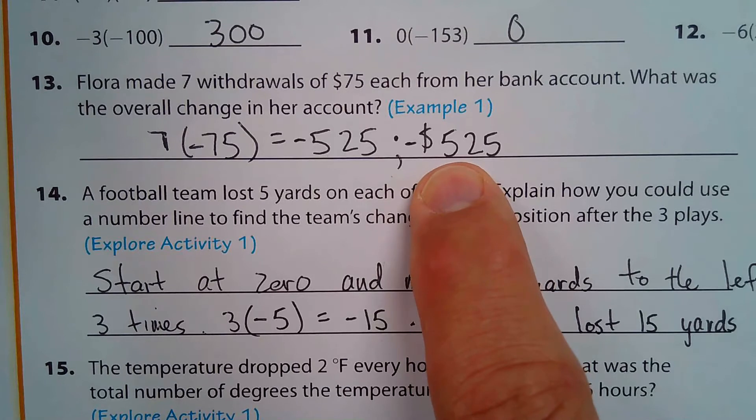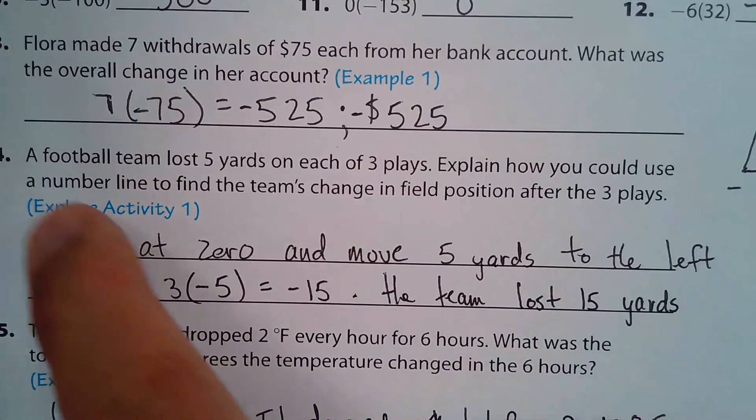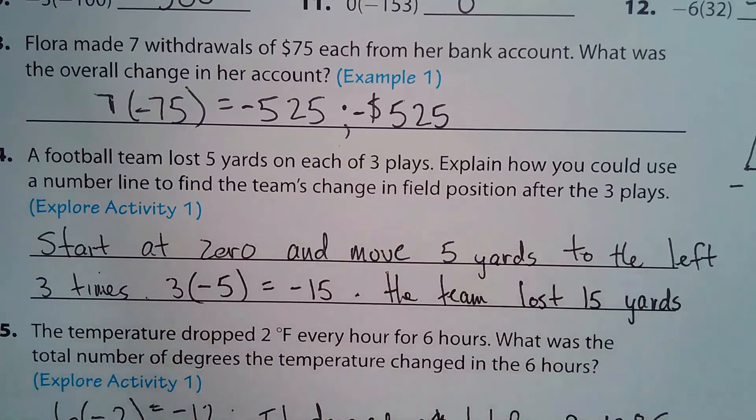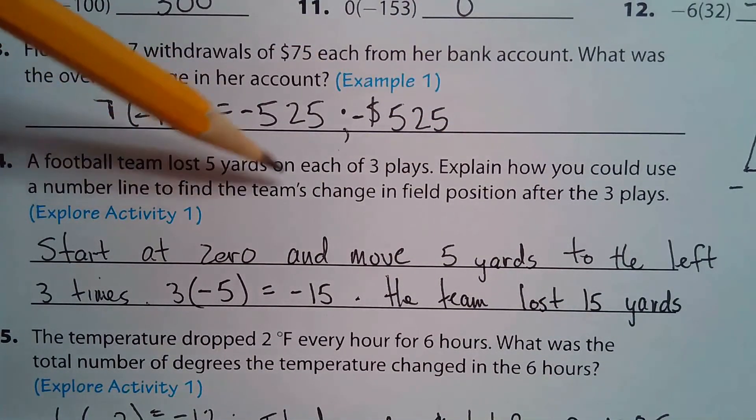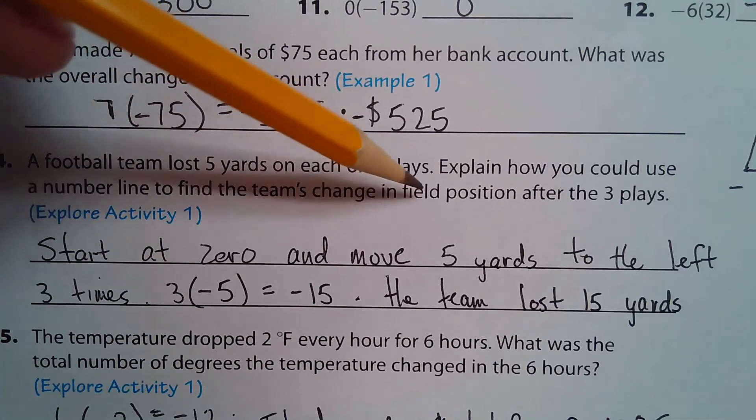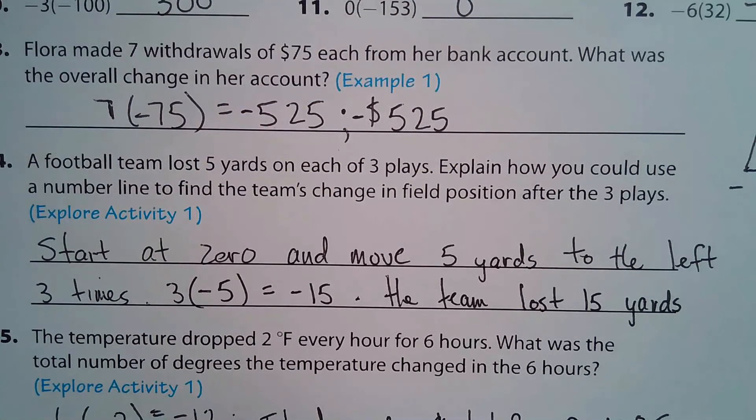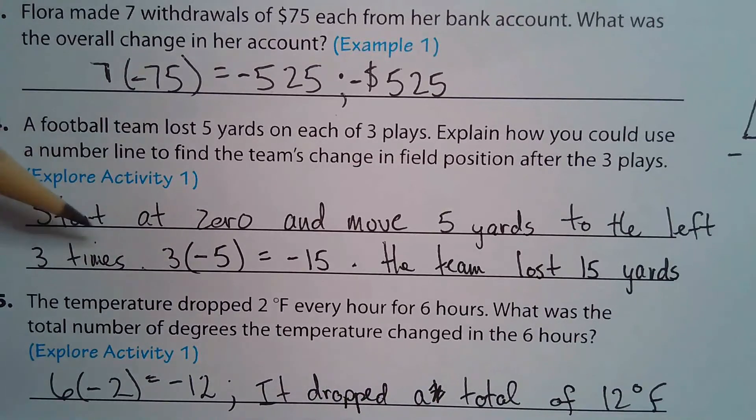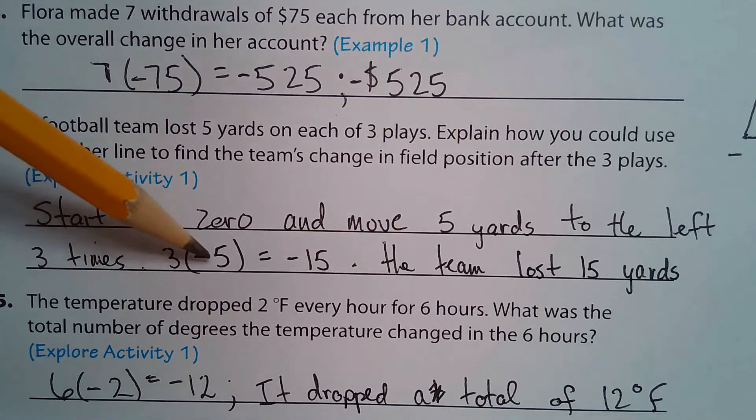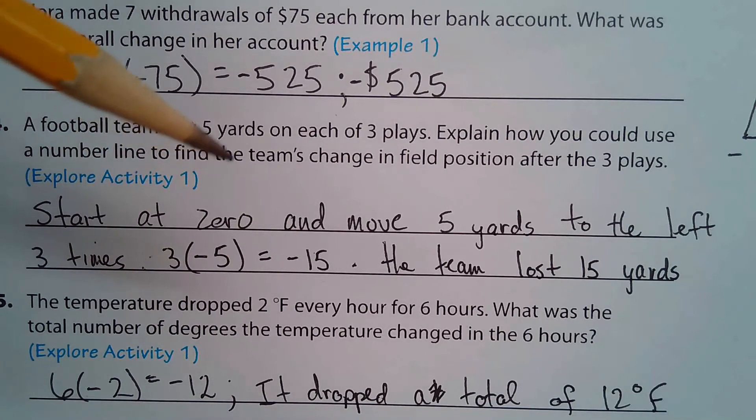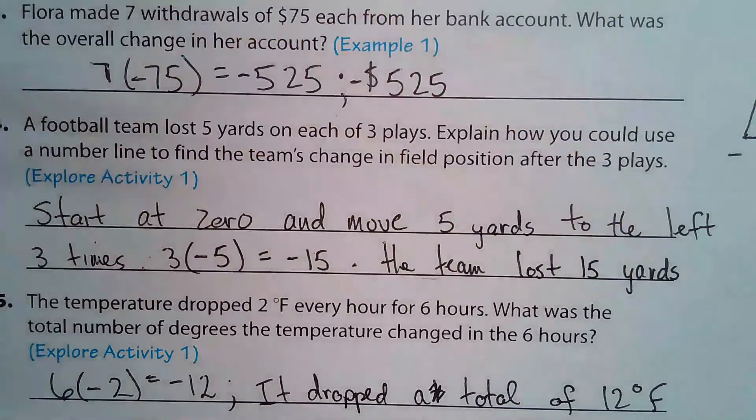And then here, a football team lost five yards on each of three plays. Explain how you would use a number line to find the team's change in field position after three plays. I would start at zero and move five yards to the left three times, which means I have negative five done three times, which is negative 15. So the team lost 15 yards.